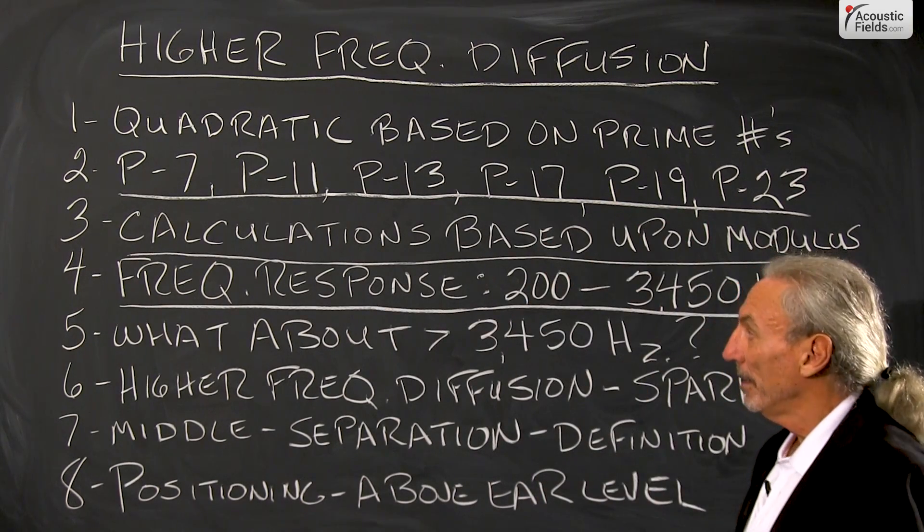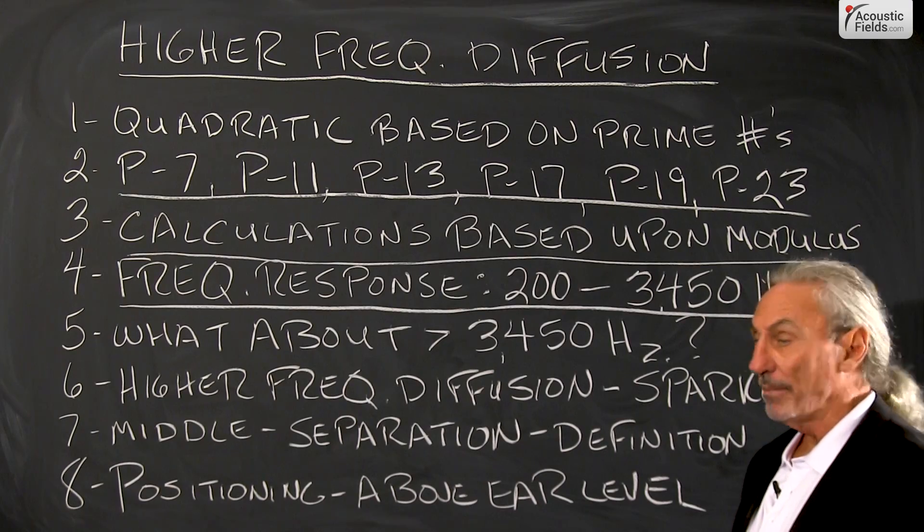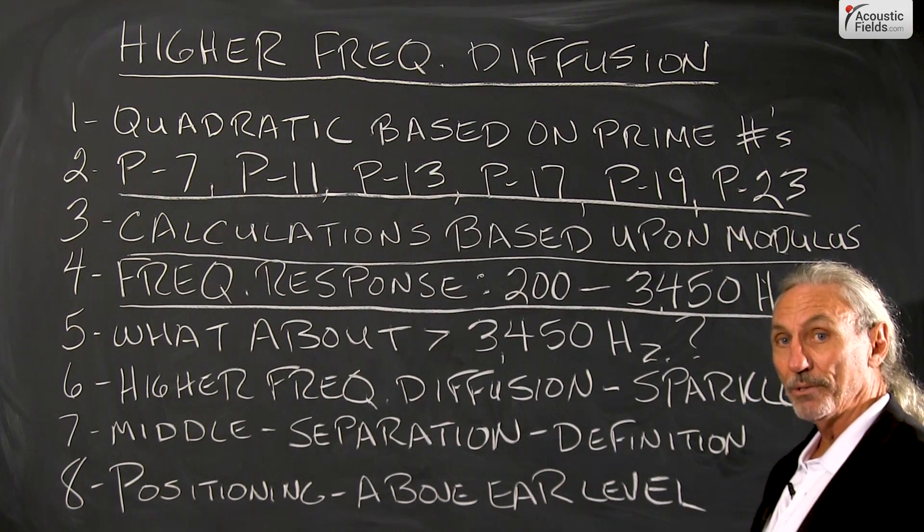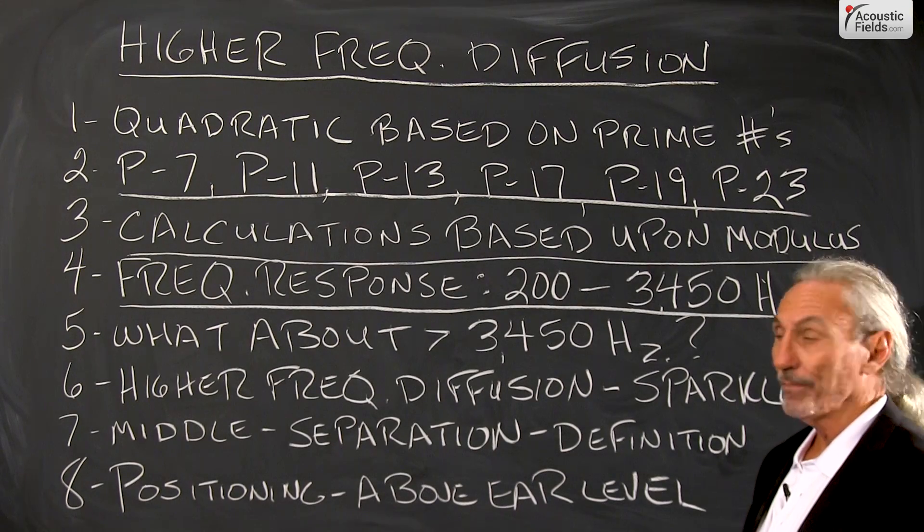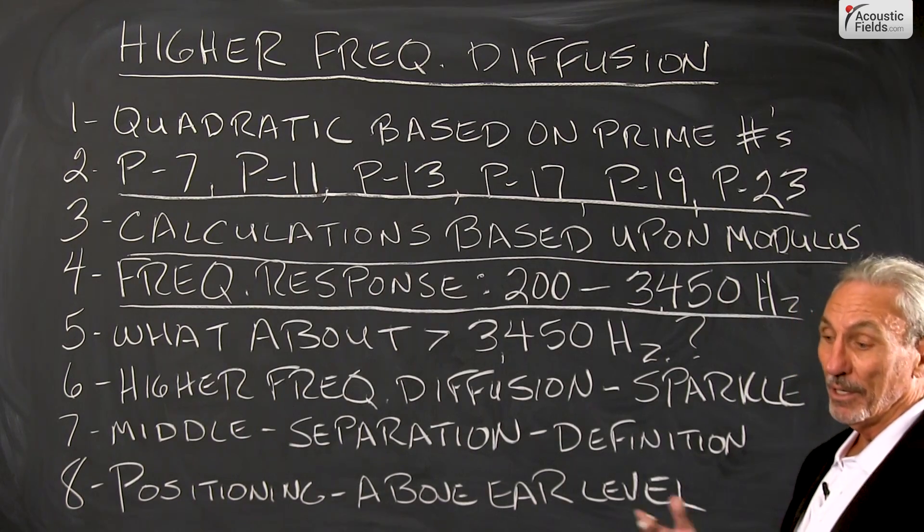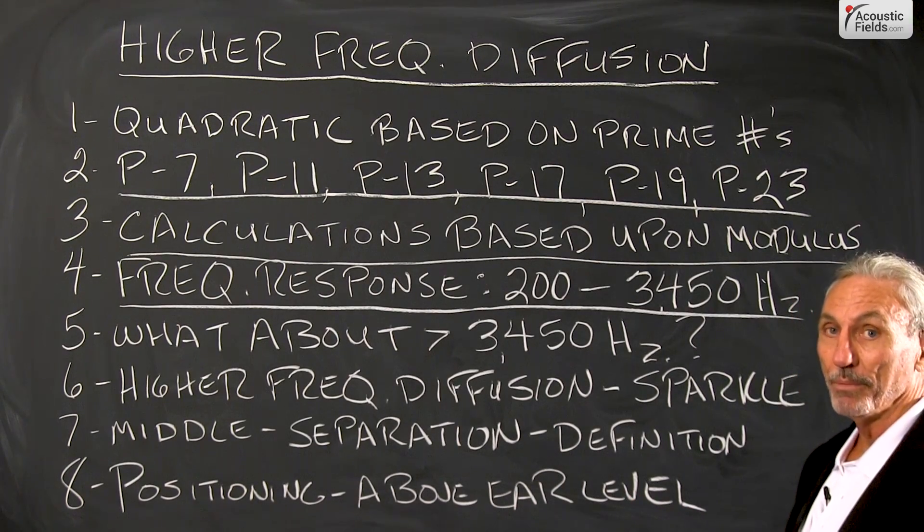A diffuser that goes down to 100 cycles is almost 3 feet deep. So it's based on quarter wavelength, right? And a 100 cycle wave is 11 foot, so 3 foot is about 25% of it.